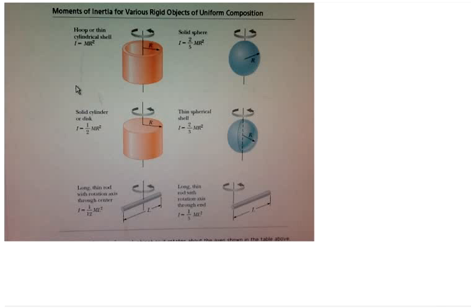Question number 13: four objects — a hoop, a solid cylinder, a solid sphere, and a thin spherical shell — each has a mass of 5.39 kilograms and a radius of 0.252 meters. Part A: find the moment of inertia for each object as it rotates about the axis shown in the table. Part B: suppose each object is rolled down a ramp; rank the translational speed from highest to lowest. Part C: rank the rotational kinetic energy from highest to lowest.